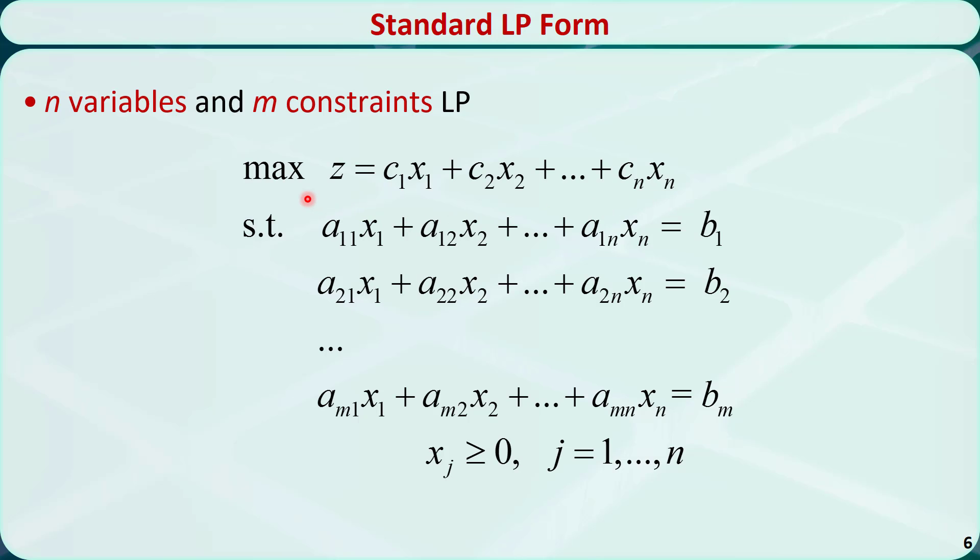It can be a maximization or minimization problem. We only consider the maximization problem here. A minimization problem can be converted to a maximization problem by maximizing the opposite of the objective function.